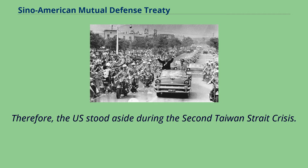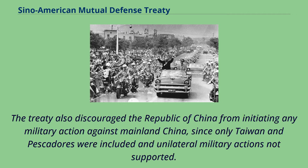Therefore, the U.S. stood aside during the Second Taiwan Strait Crisis. The treaty also discouraged the Republic of China from initiating any military action against mainland China, since only Taiwan and the Pescadores were included and unilateral military actions were not supported.